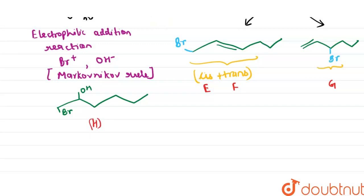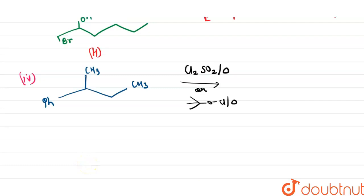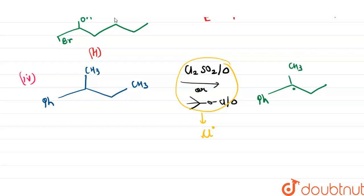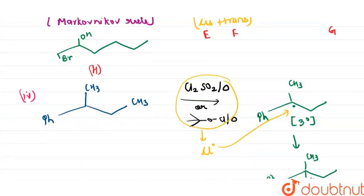Let us consider reaction number four. The given reagents provide a chlorine free radical, which attacks the compound. The most stable free radical formed is a tertiary free radical — •C(CF₃)(Ph) — which is a three-degree free radical. The chlorine free radical attacks this to form the product. This compound is optically active, so we have two isomers for it.